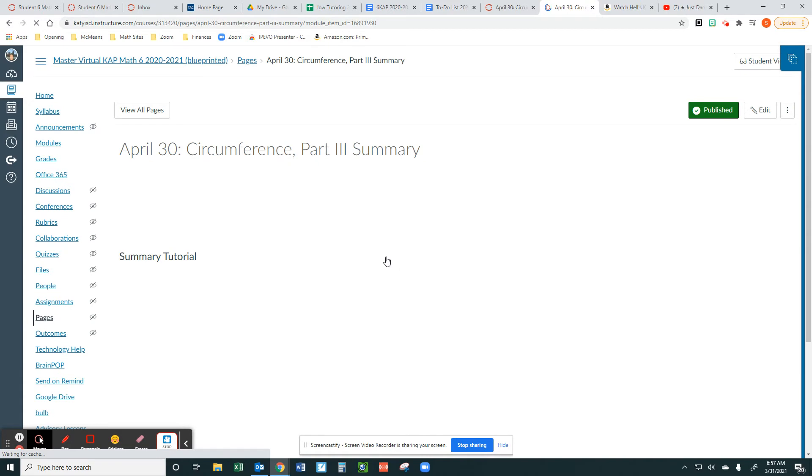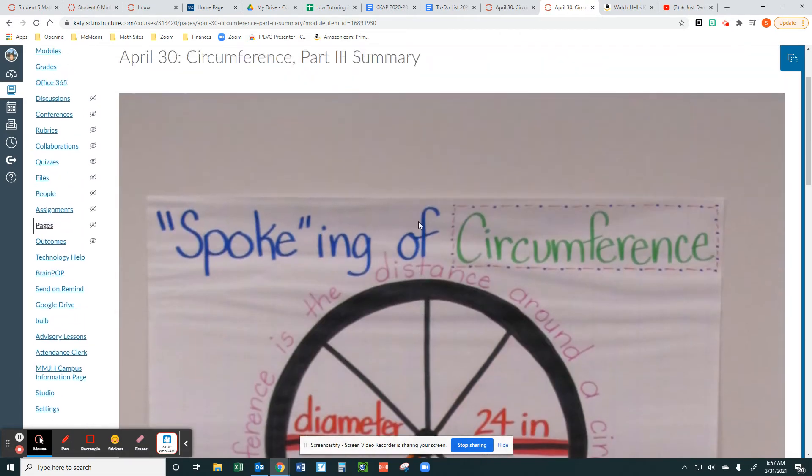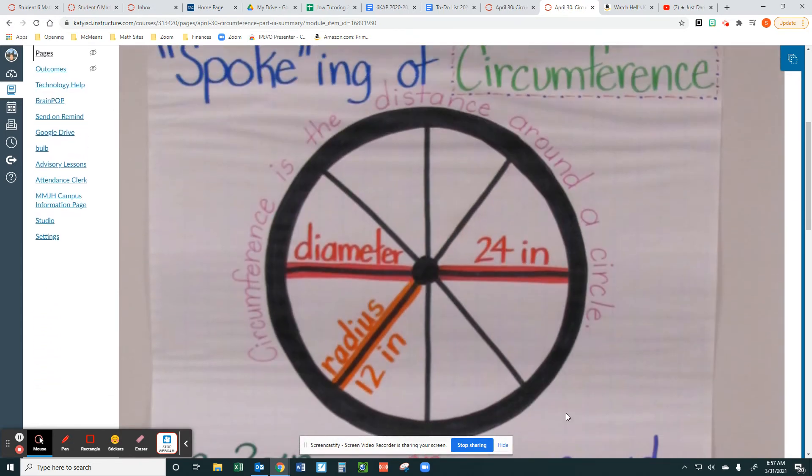So this is our anchor chart that reinforces our learning. It's called Spoking of Circumference. So circumference is the distance around a circle. Diameter is a line that goes from one end to the other end through the center. Radius is a line that goes from the edge to the center. Notice that the diameter is always double the size of our radius. Our radius is half the size of diameter.